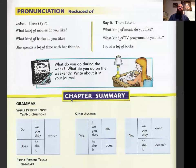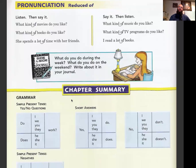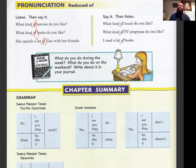Let's practice pronunciation — listen and repeat after me. 'What kind of movies do you like?' Pay attention: in sentences like this, the 'of' sound kind of disappears. It's almost like you don't hear it. 'What kind of books do you like?' 'She spends a lot of time with her friends.' 'What kind of music do you like?' 'What kind of TV programs do you like?' 'I read a lot of books.' Notice 'a lot of' and 'kind of' come together and link up in natural speech.